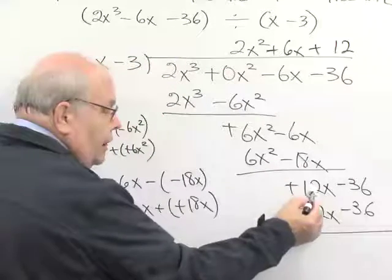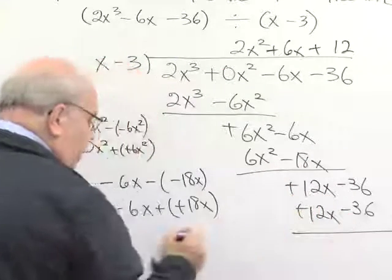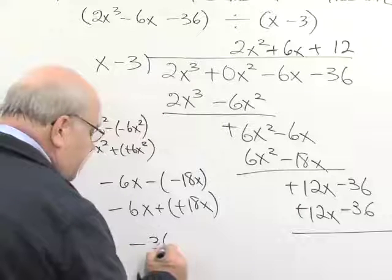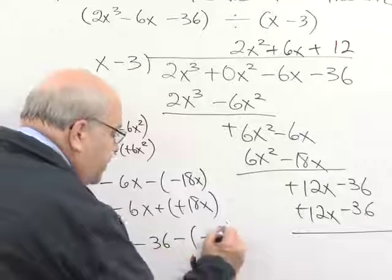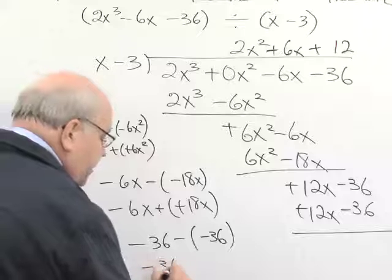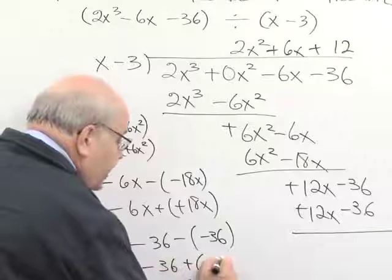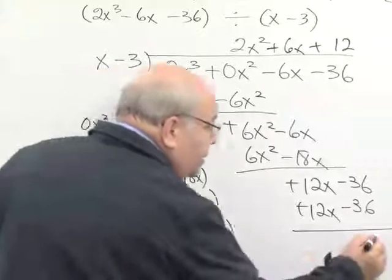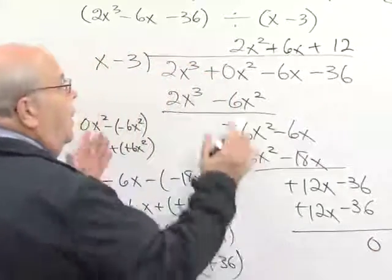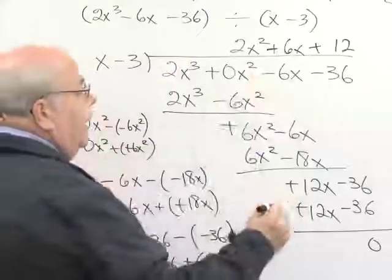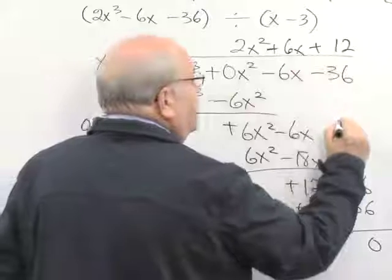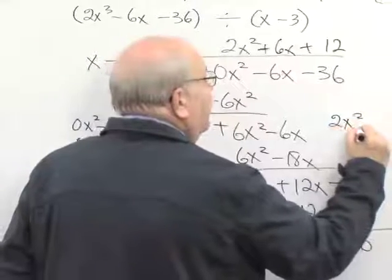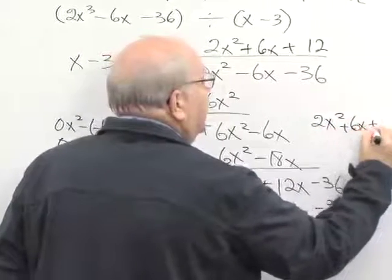We probably are obviously clear that 12x - 12x is 0, but obviously here -36 subtract a -36 is the same as -36 added to a positive 36, so that result is also 0. So our answer for doing this entire problem is 2x² + 6x + 12.